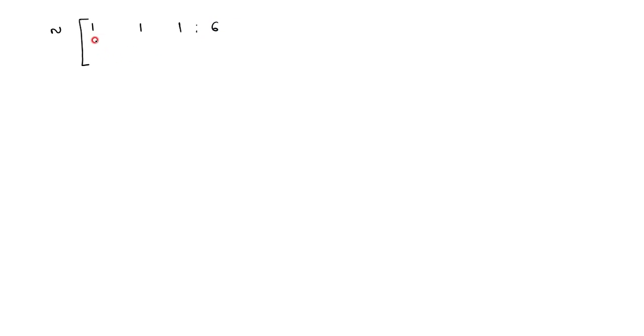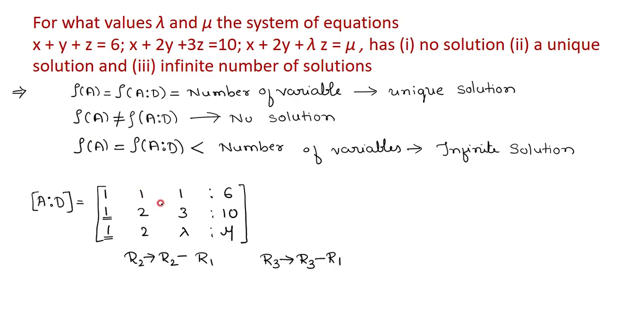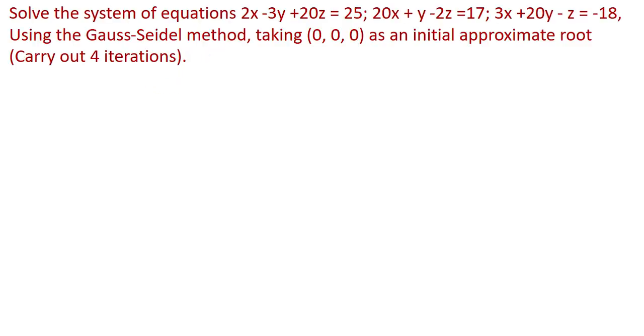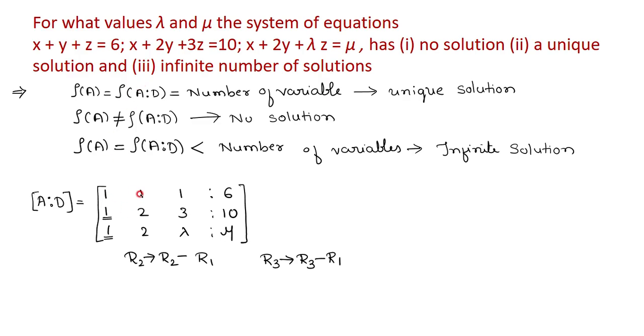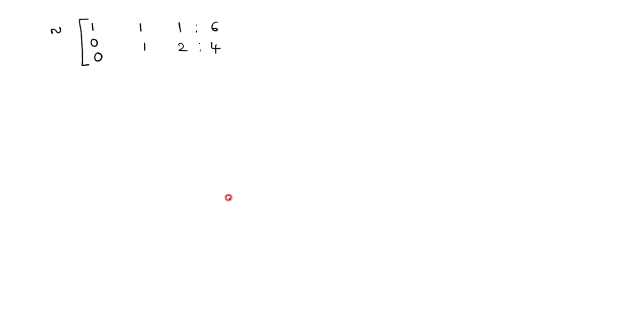After the subtraction, the first row remains unchanged. For the second row: 2 minus 1 is 1, 3 minus 1 is 2, 10 minus 6 is 4. So the elements of the second row are 1, 2, 4. For the third row: 2 minus 1 is 1, and we write the remaining elements as lambda minus 1 and mu minus 6. So the third row is 1, lambda minus 1, mu minus 6.